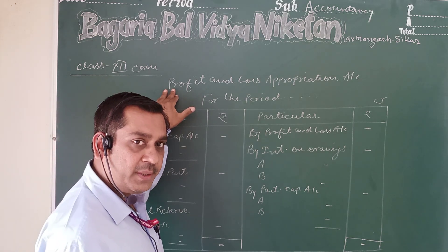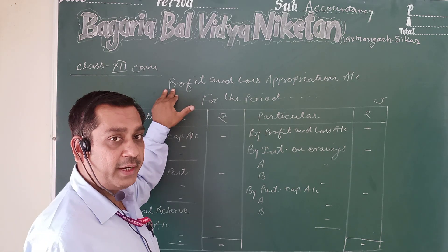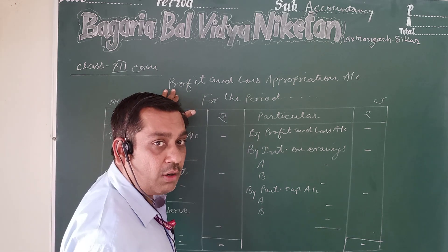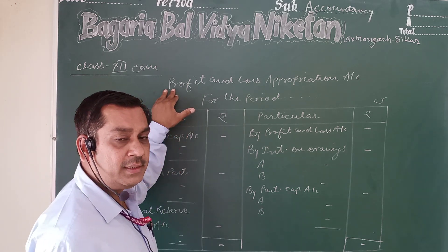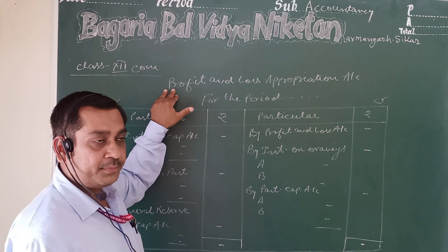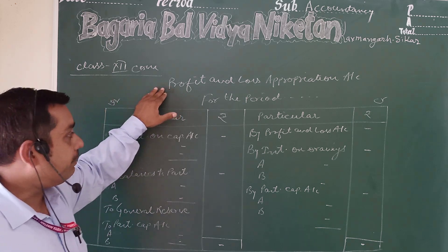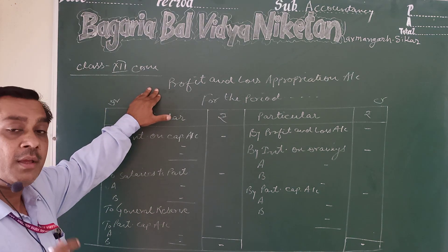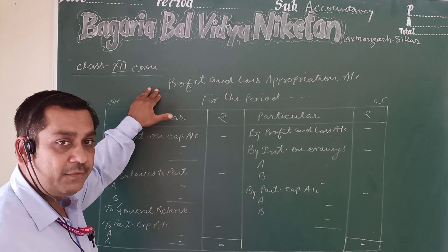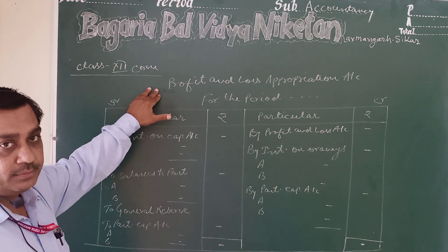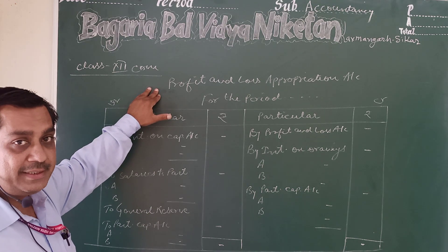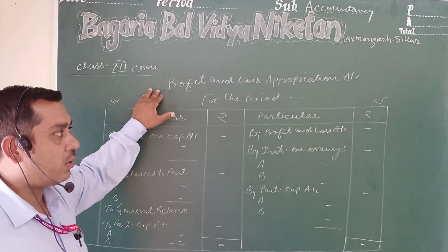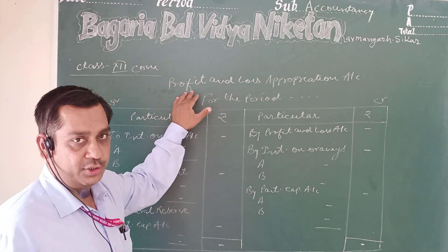In sole proprietorship, we find the net profit from the Profit and Loss Account and that sole profit belongs to the business owner. But in partnership, the net profit found from the Profit and Loss Account is divided among the partners through the Profit and Loss Appropriation Account.